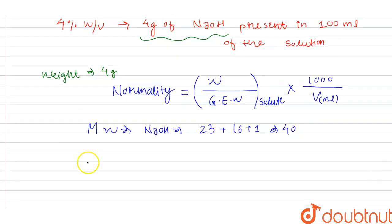And what is the formula of equivalent weight? Gram equivalent weight is molecular weight divided by the valence.